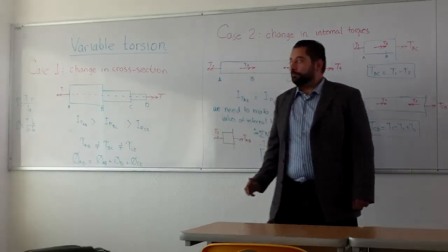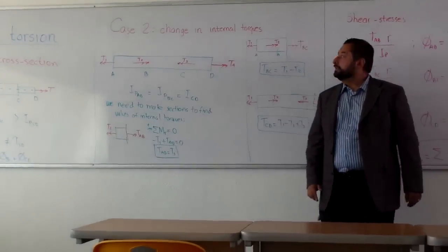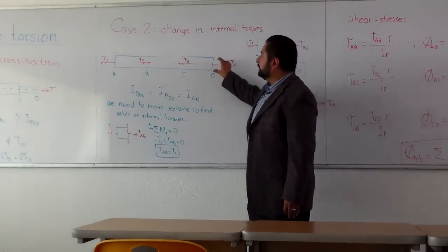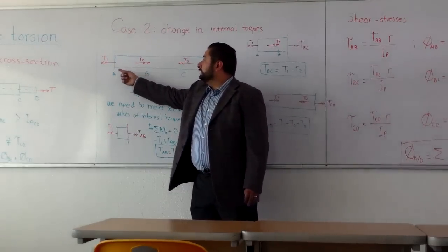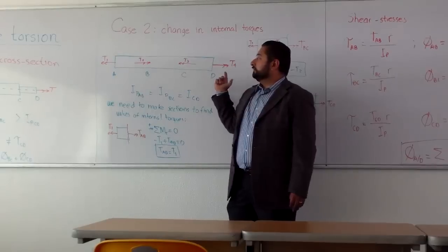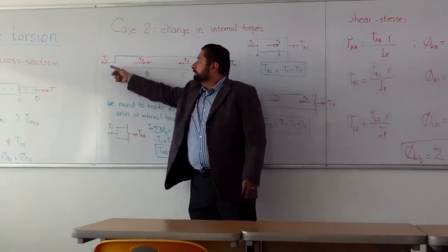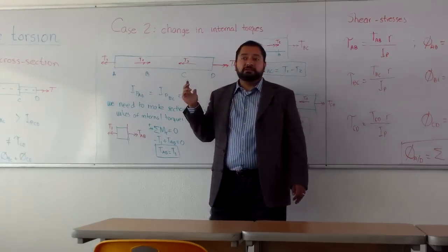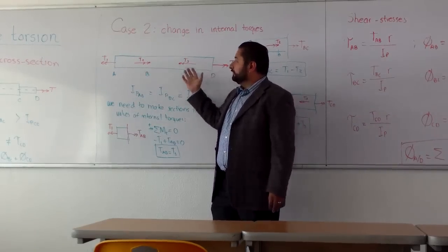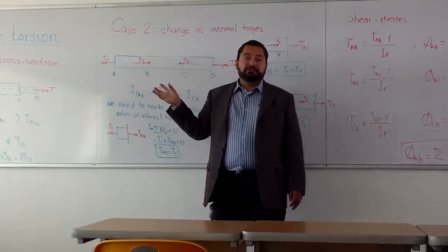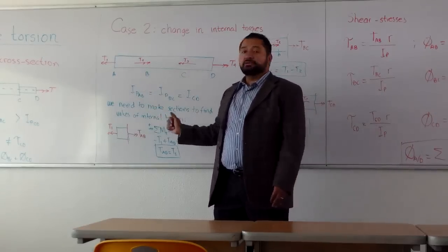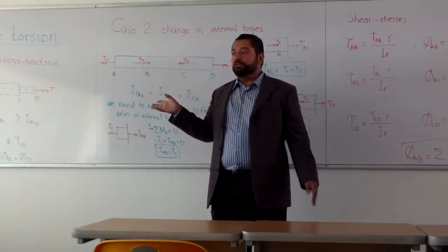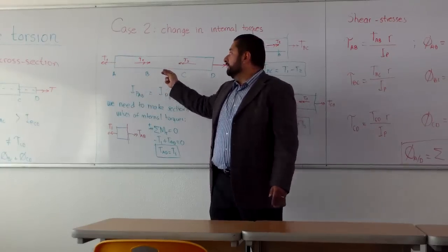And then we proceed to the second case in which we have a change in internal torques. This is a constant and uniform circular bar under torsion. But we see in this example four different external torques. And the question is, which torque do I use to calculate the stresses and to calculate the angles? And my answer is all of them, but not in a straightforward manner.